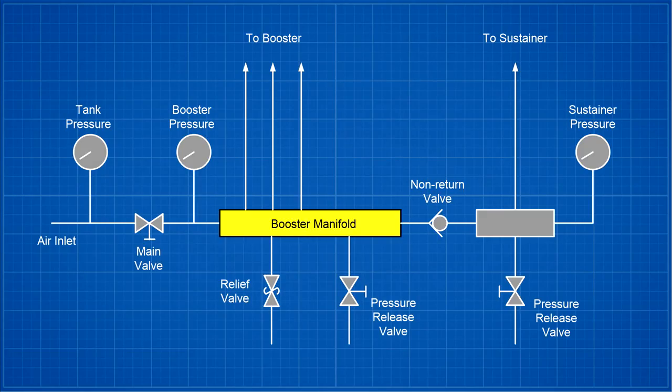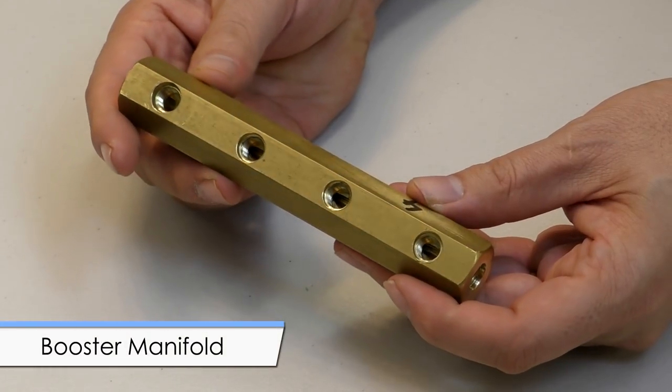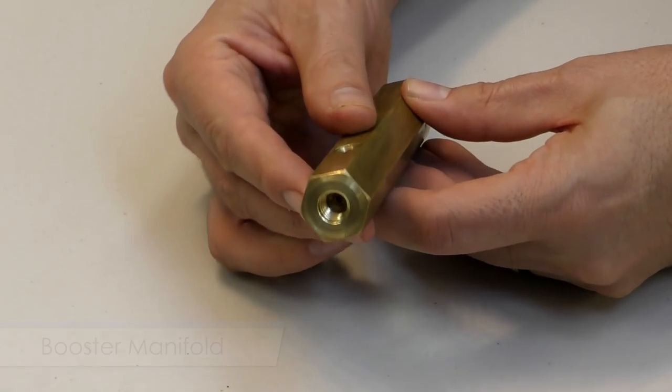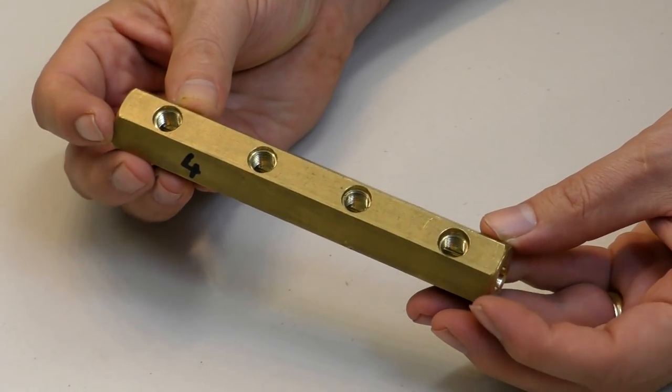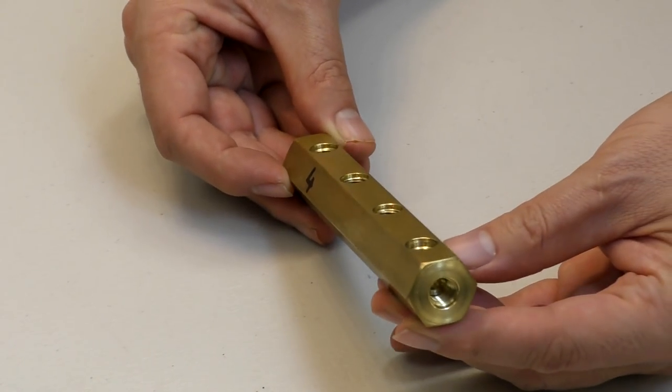The booster manifold is basically an interconnect for several components and the hoses that go to the individual booster segments. It was machined from a solid bar of brass and a set of holes was drilled and tapped to fit the hoses and other components.